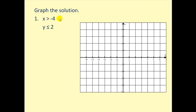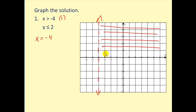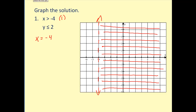Let's graph the solution to this system. x is greater than negative four, so we'll graph the line x equals negative four, but it will be dashed because of the inequality symbol. We could pick a test point — if we pick the point (0, 0) and substitute zero for x, we'd have zero is greater than negative four, which is true. So we will shade the right side of this plane. This is the solution to the first linear inequality.